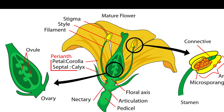Diagram of a longitudinal section, LS, of a flower. 1. Sepals — calyx: the outermost whorl of leaf-like structures, typically green, that protect the developing flower bud.